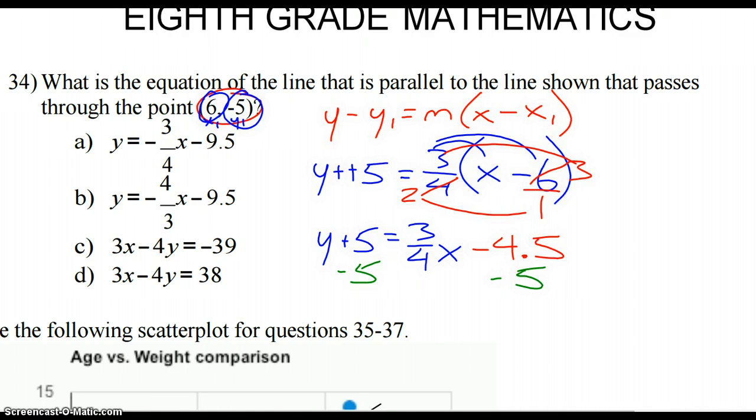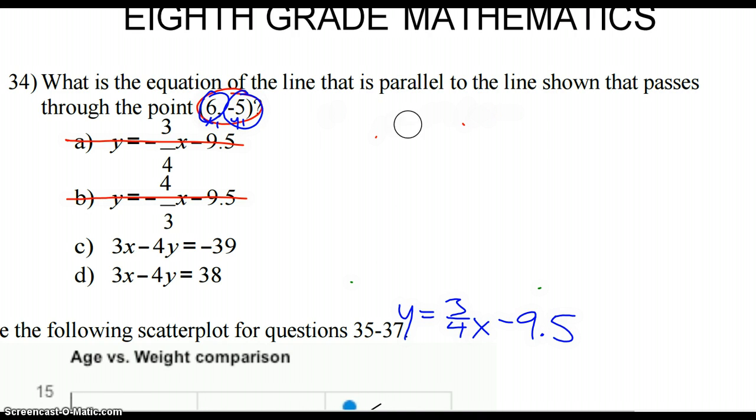Okay, do we see any that match that? A is no, that's a negative slope. B also has a negative slope, and it's flipped from what we've got, so it's not that one. Looks like we've got to convert this to standard form, so it's going to be C or D, which means I shouldn't have converted that to a decimal, but that's okay. We can still work with that. It was just easier to add that way. So I'm going to get rid of this, and we're going to take our equation here, and we're going to turn it into standard form.